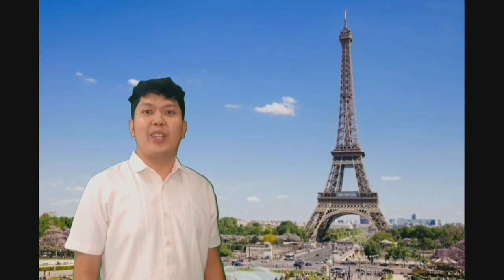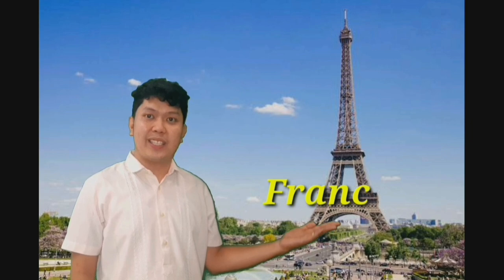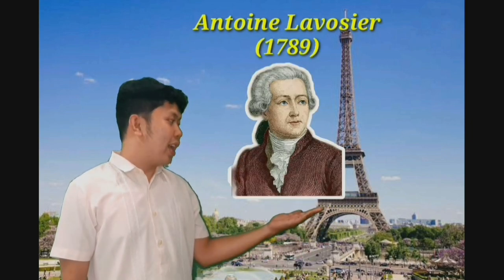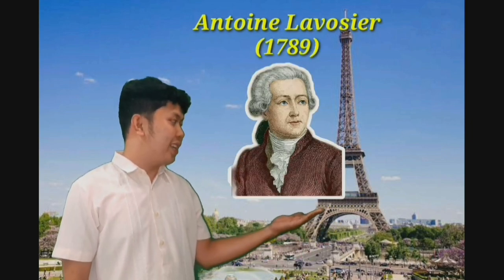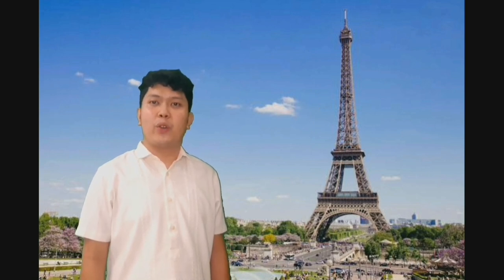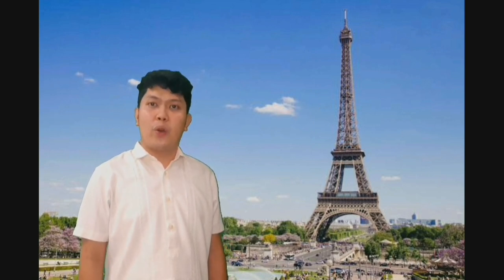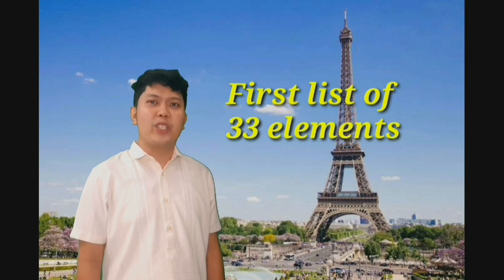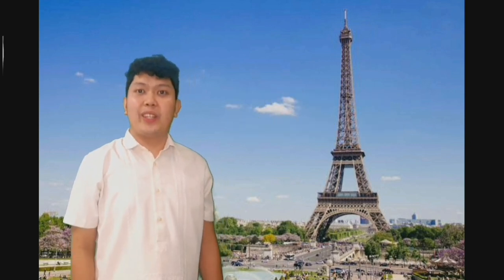The next person lives here in France. He is none other than Antoine Lavoisier. Lavoisier was the first person to write an extensive list of the first 33 elements. Now we're done here, so let's go to the next.